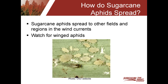Another question is how does the sugarcane aphid spread? The sugarcane aphid spreads in the wind currents, and that's how it moves from field to field and even region to region — it can literally move hundreds of miles this way. Watch for aphids with wings on them in the field. Sometimes you'll see a field with a lot of winged aphids, which means they're getting ready to move. They'll get up into the air and the wind will carry them to other fields or regions. Conversely, winged aphids in your field could mean the aphid has just arrived.